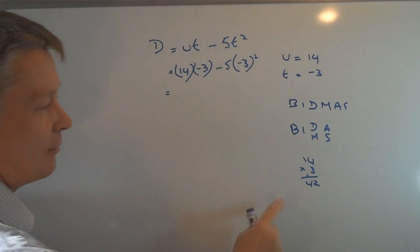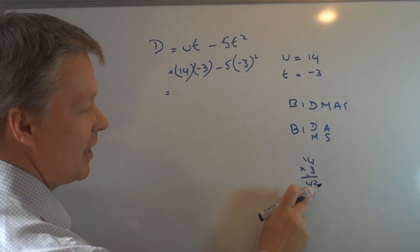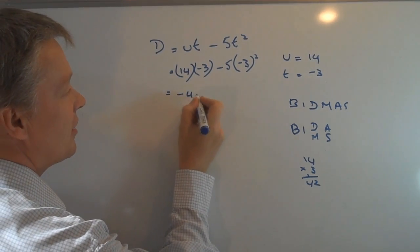So 14 and you've got minus 3 here. Mustn't forget it's minus 3. So that's going to be now minus 42.